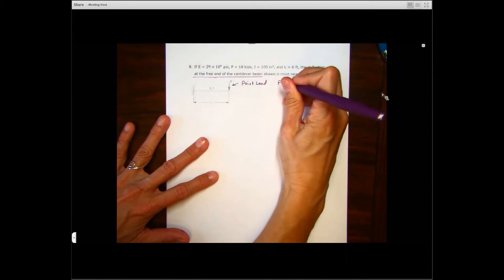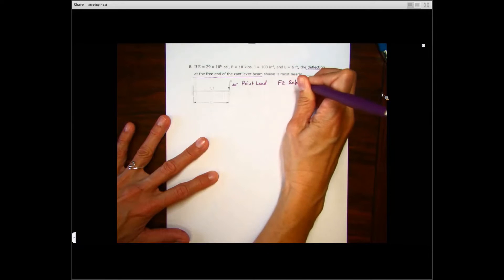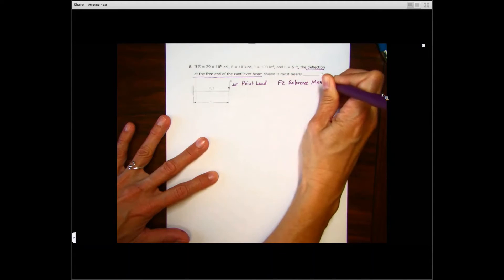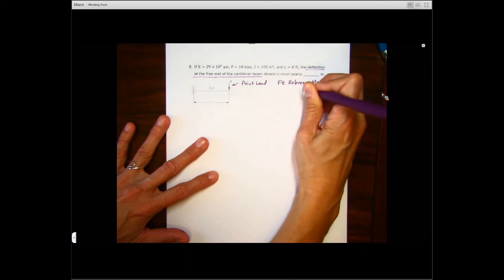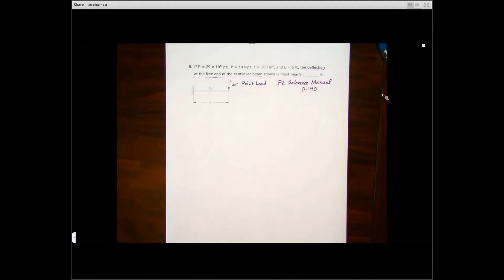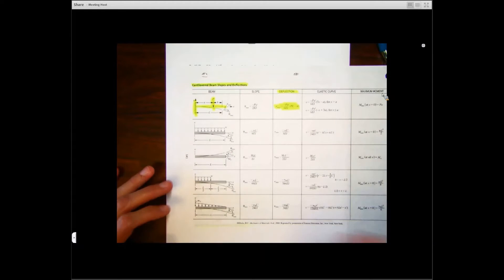So let's go ahead to that FE reference manual. They have a lot of nice diagrams on these starting on page 140. I'm going to show you a couple of those and how to use them. Grab it out here. Okay, this is actually page 141 is where the cantilever beams start.